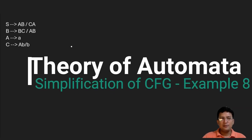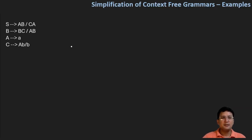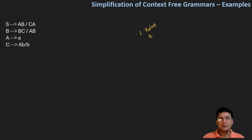Hello everyone, we will solve some more questions related to the simplification of grammar. So let's say this is the grammar given. You know the simplification steps — first of all, let's remove useless productions. In useless productions, we have two categories: one is that we cannot reach a non-terminal, and the other is that we can never reach the start symbol.